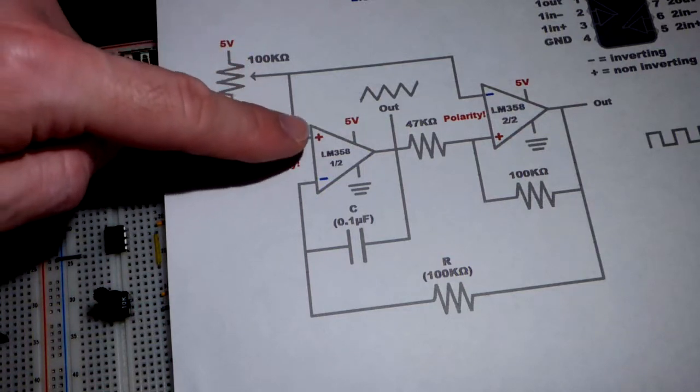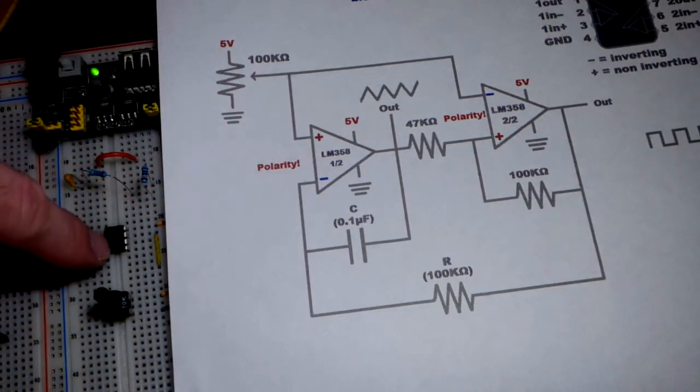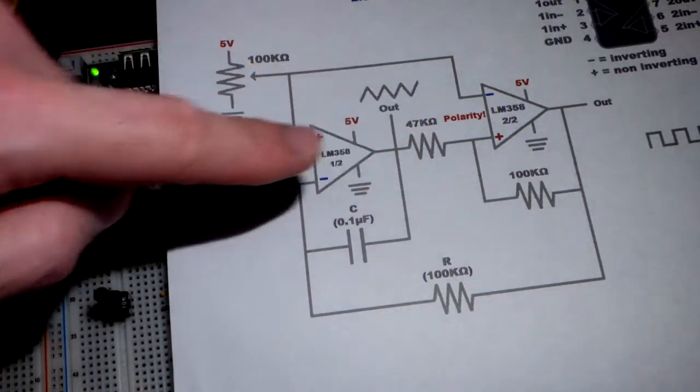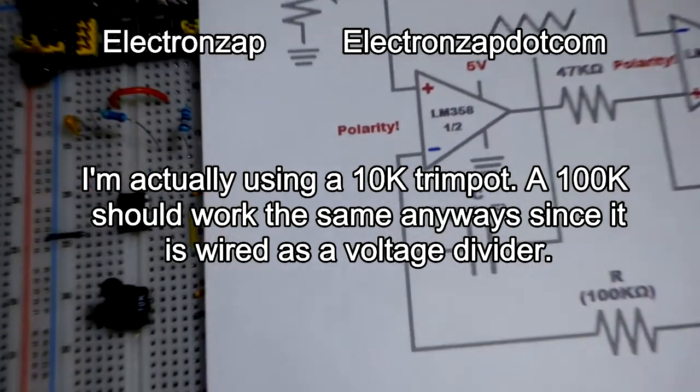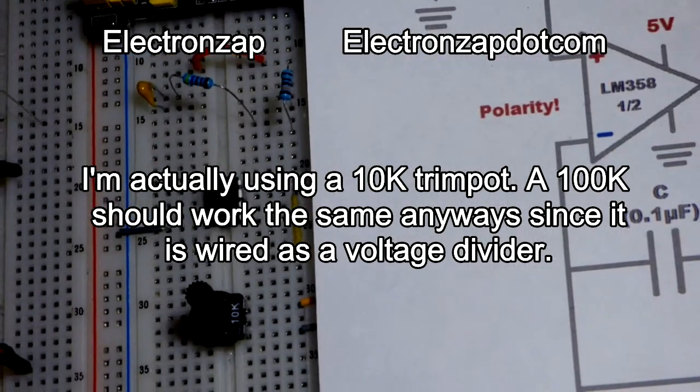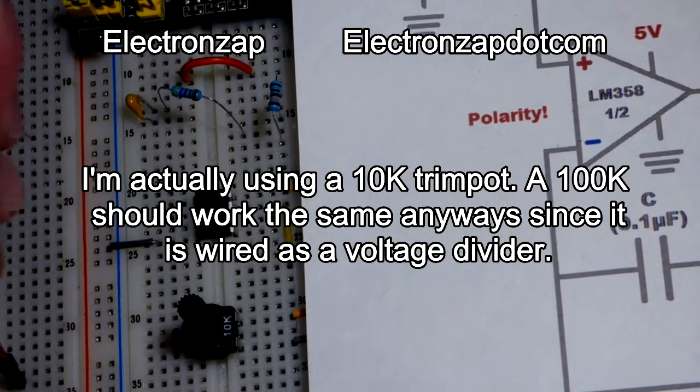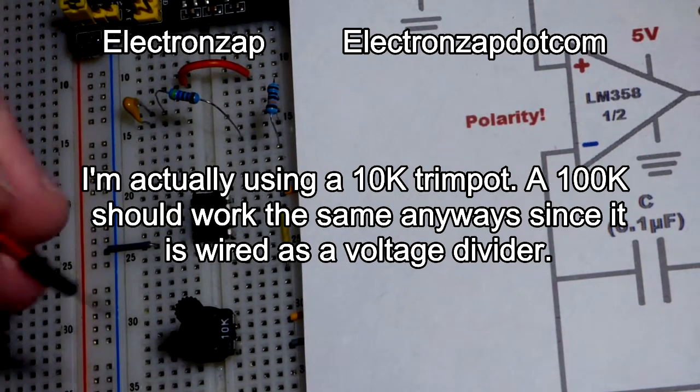The trim pot up here is going to go to the non-inverting input of this op-amp and the inverting input of that op-amp. So let's take care of that right now. We'll zoom in.